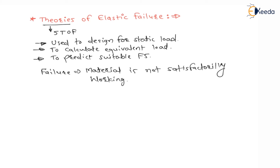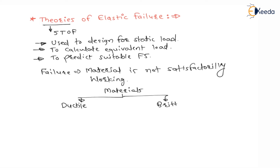Now we have to see what are the materials. If you want to see theories of failure, we have to see materials. Basically we have two types of material: ductile materials and brittle materials. We have to see theories of failure for ductile as well as brittle materials.